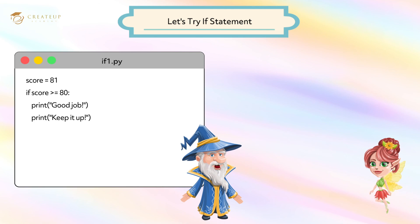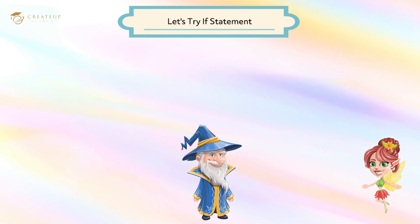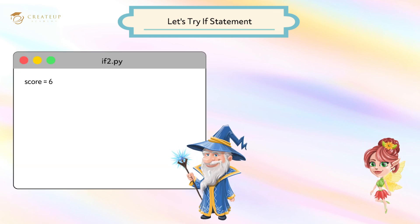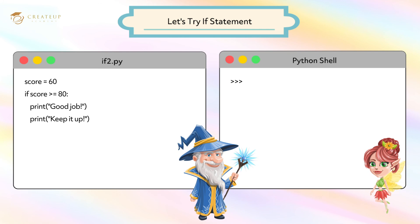Save and run this program. The score was over 80, so the process was run. What happens if the score is lower than 80? Open a new file in IDLE and write the code like this. Save and run this program. Since the score was lower than 80, it was not processed.